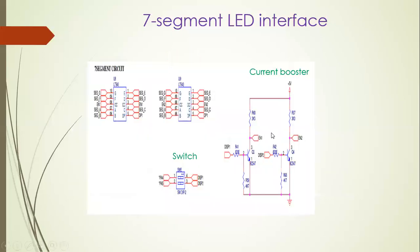Now let us see the internal architecture for the switch and the current booster. The enable signal goes from LPC through PA4 and PA5, that is port 0 pin 19 and pin 20, to the switch and current booster. Logic 1 passes through the switch as output, reaching disk 1 and disk 2, which are connected to two BJTs. Logic 1 turns on both transistors, pulling 5V down to ground. So at enable 1 and enable 2 we get logic 0. Thus logic 1 from port pins 19 and 20 is converted to logic 0, which enables the segments.